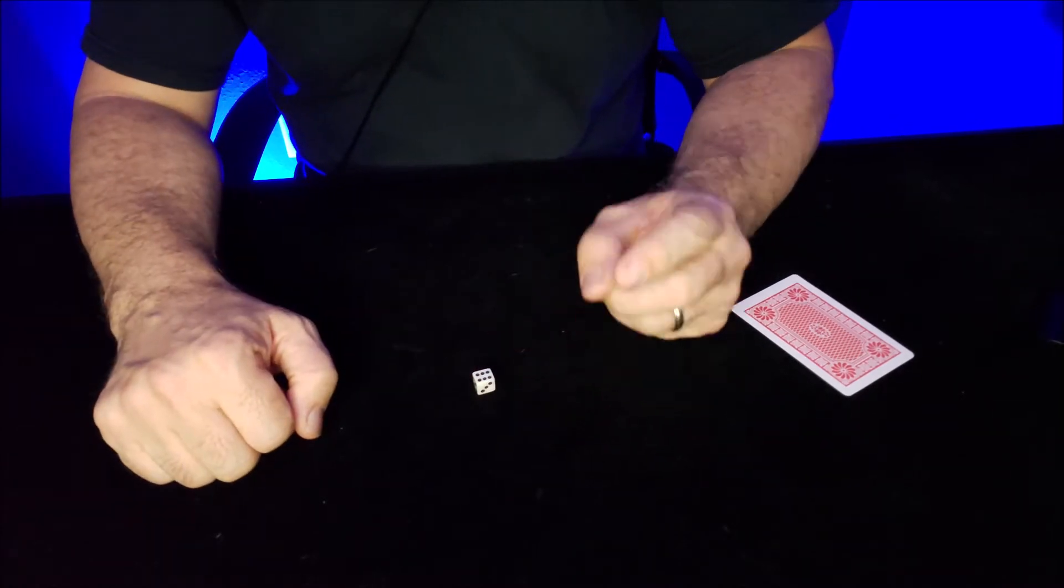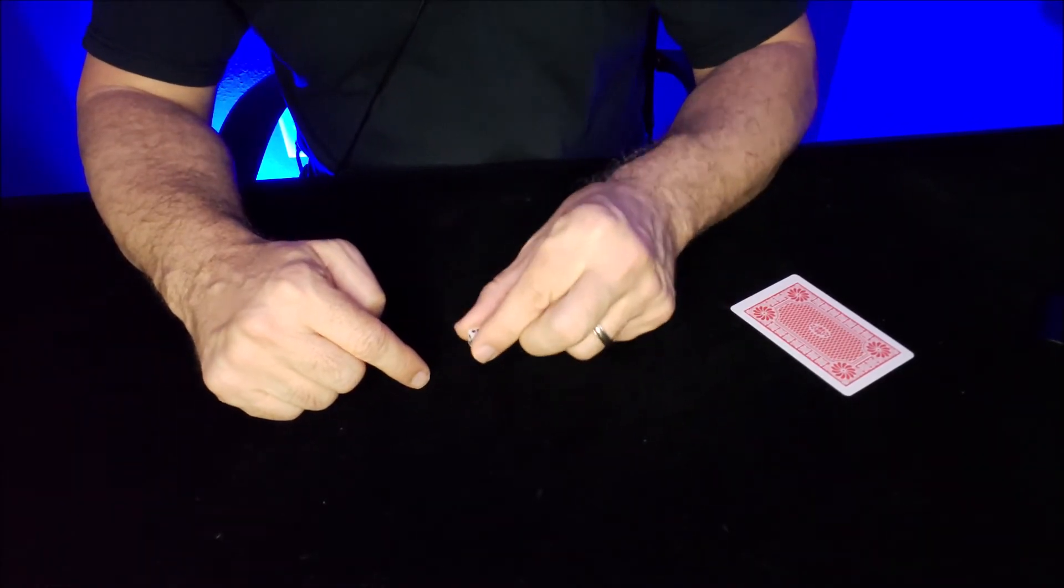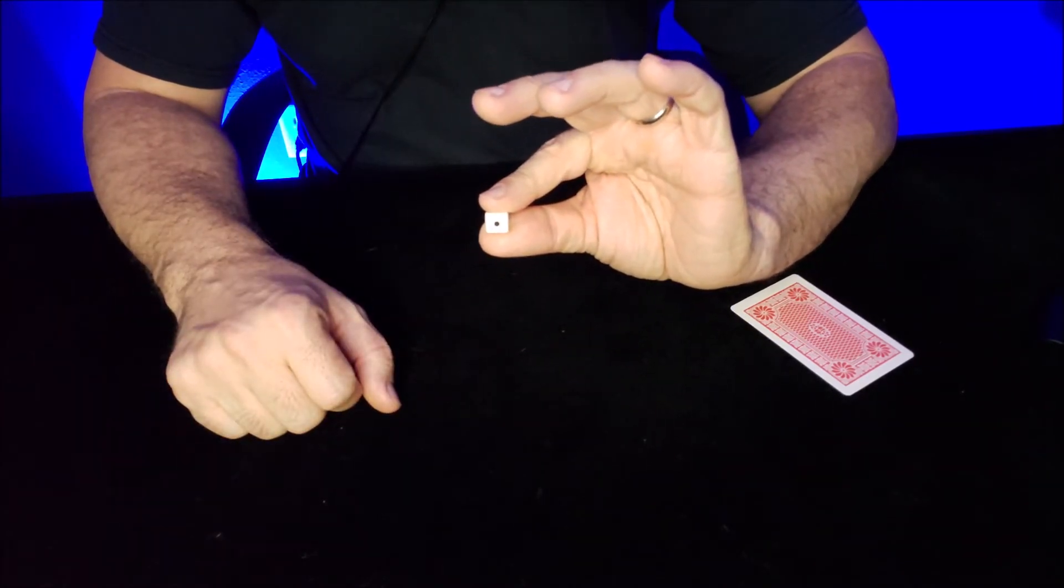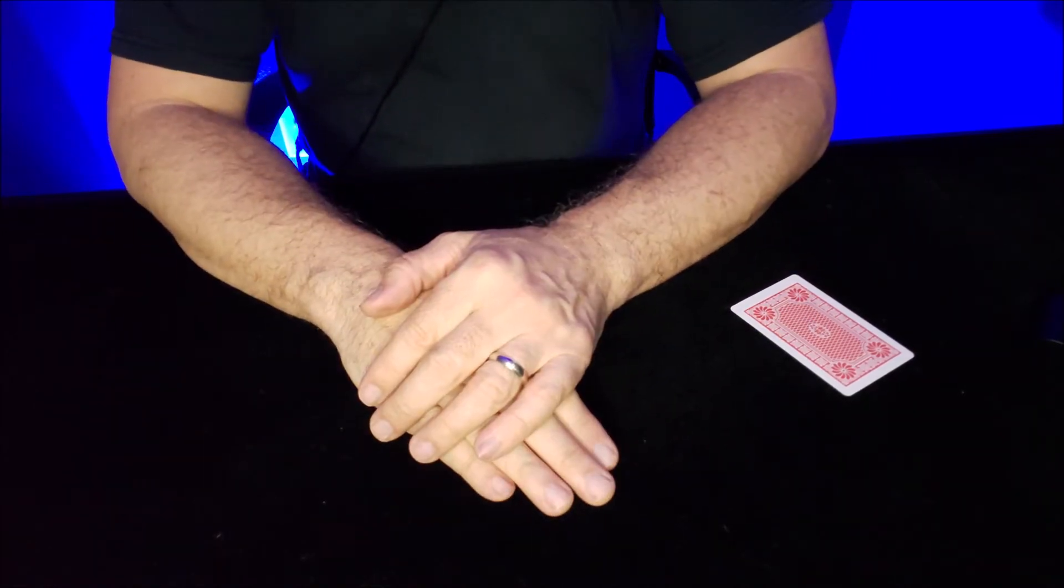They roll a six. They're supposed to take that six, lift it up, turn it over, and add it to the number on the bottom. Well, six plus one is seven, right? They leave their hands covered, and then...